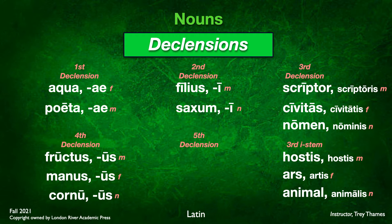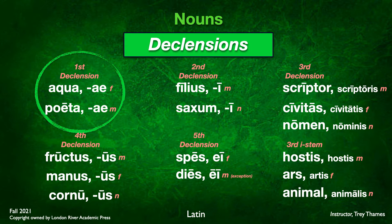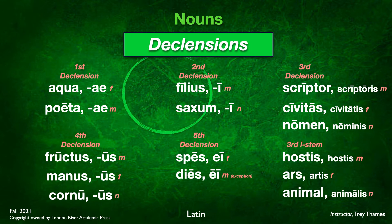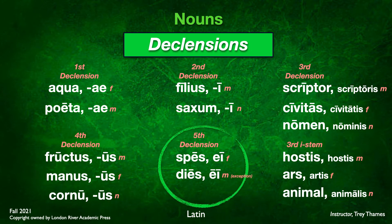And this brings us to our final and fifth form: spes, spei; dies, die. These are mostly feminine forms in fifth declension. There are a few masculine forms — the word dies is masculine in any compound form of the word dies. So there's first, second, third, third i-stem, and fourth and fifth declensions — and this is what we're going to be looking at in this lesson.